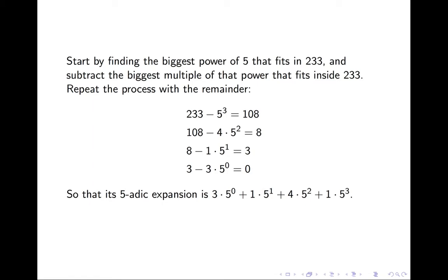So for example, 625 which equals 5 to the 4th power does not fit inside 233. So we need to look for a lower power of 5. In this case, 5 cubed which equals 125 fits inside 233.